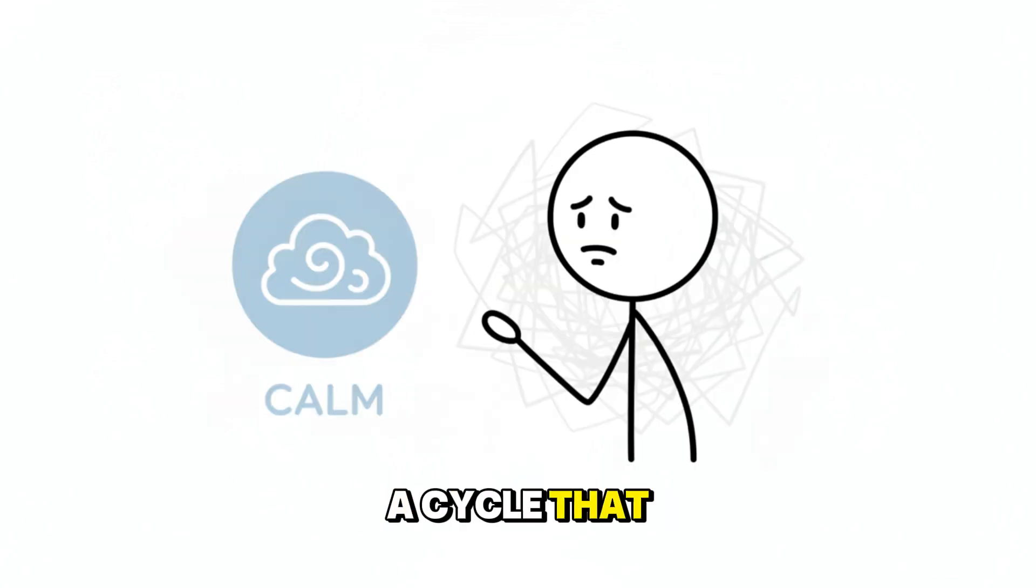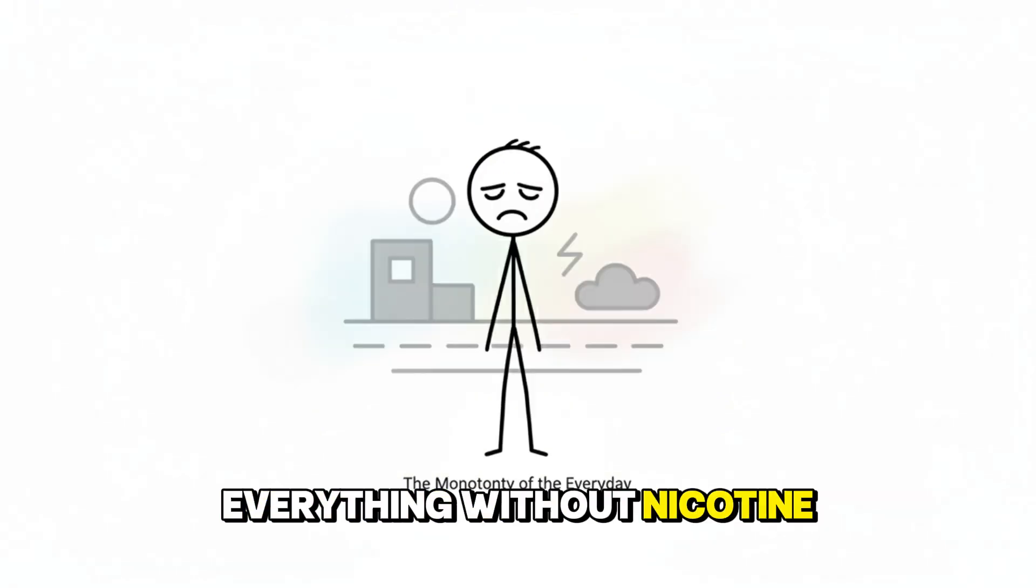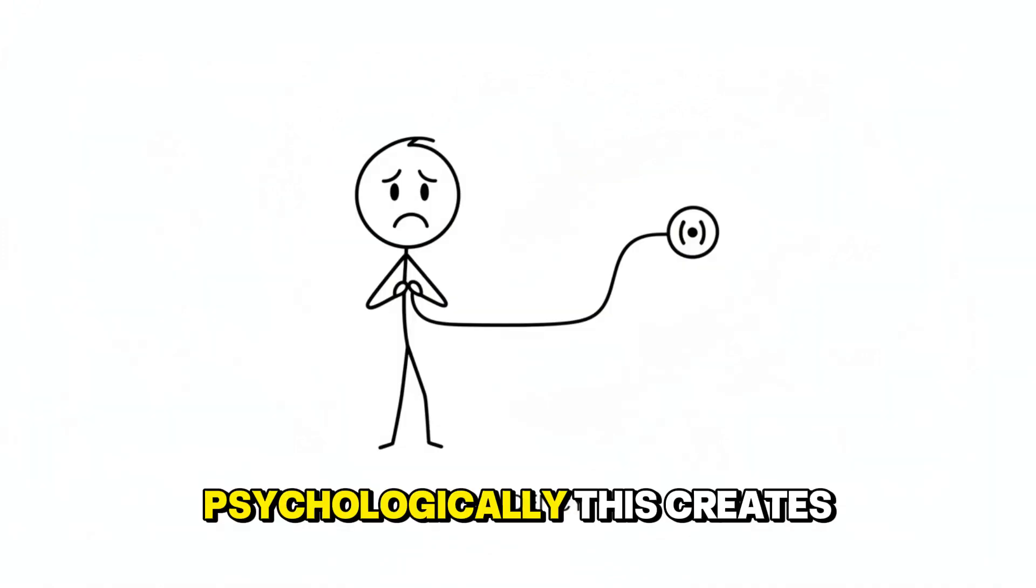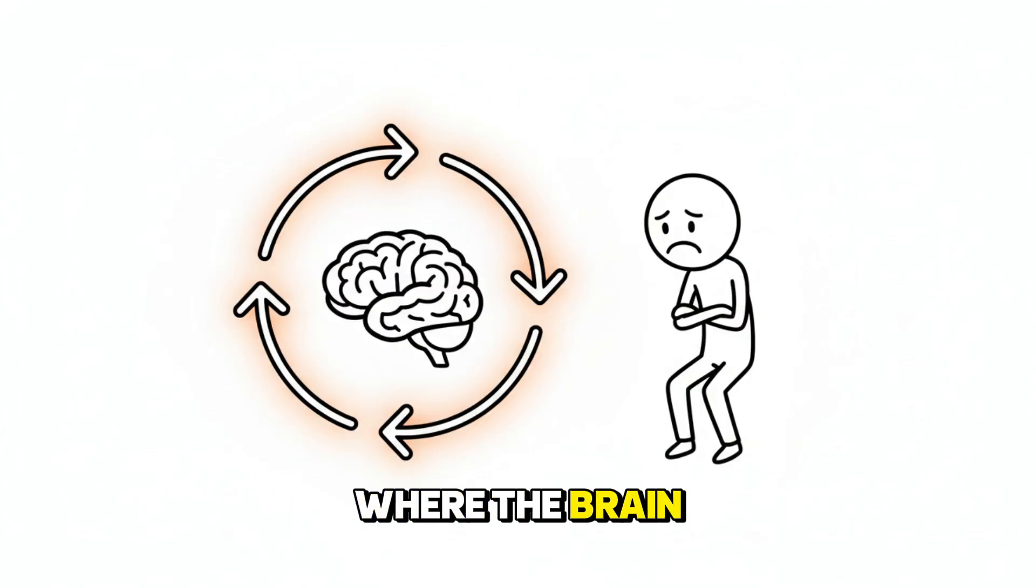A cycle that tricks the mind into believing the substance brings calm, while it actually maintains stress. Over time, your brain learns that relaxation only exists between cravings. Everything without nicotine feels dull or slightly off. Psychologically, this creates a form of dependency, where the brain expects relief from something that constantly resets its own withdrawal.